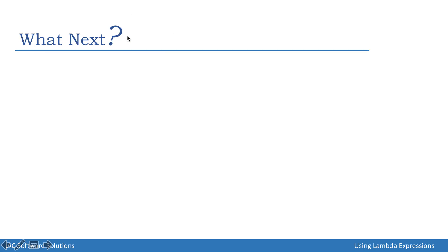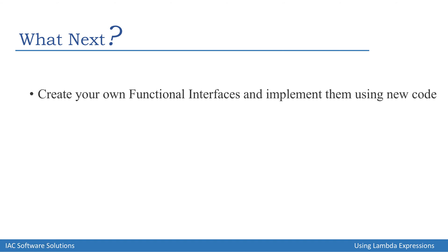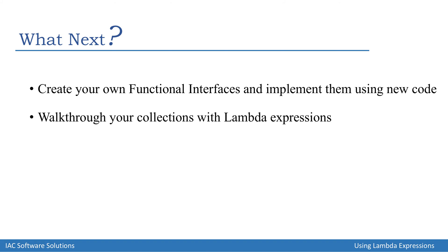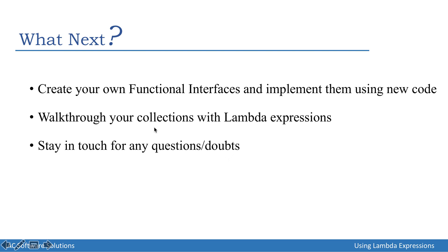What next? Create your own functional interfaces and implement them using this new, improved, smarter piece of code. We just have to include one abstract method and our functional interface is ready. In this video I walked you through how lambda expressions can help us reduce code when implementing functional interfaces, but there's more to it — like using lambda expressions to traverse any collection object — and I leave that for you to explore.